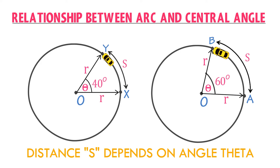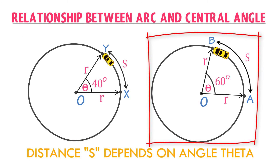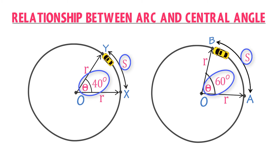From this example we learn that the distance S covered by an object on a circular path depends upon the angle theta at the center. In the first circle, the angle theta is small, so the distance covered is smaller. In the second circle, the angle theta is larger, so the distance S is larger. Remember: there is a direct relationship between arc S and the angle extended by that arc at the center of the circle.